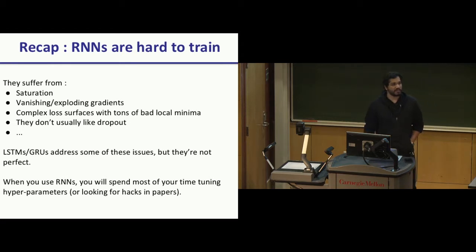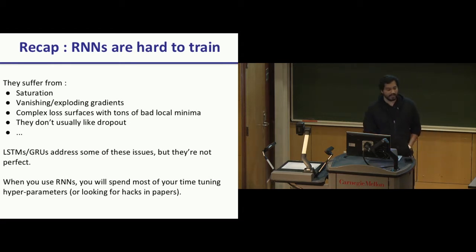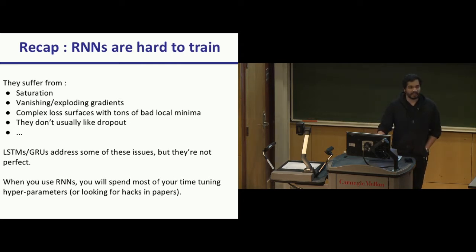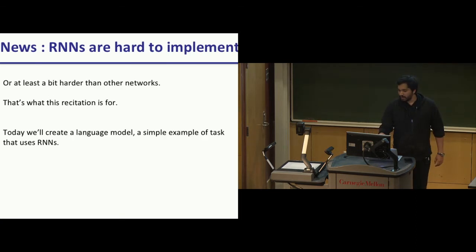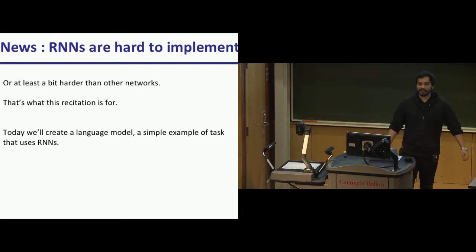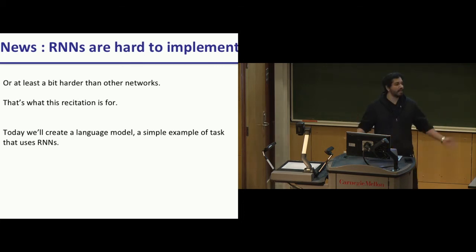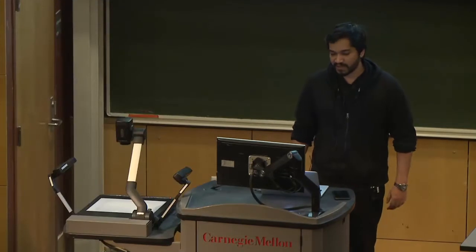You've seen architectures like LSTMs and GRUs that try to address some of these issues — it's still not perfect and it's still a bit difficult to train these things. In real life, when you decide to train an RNN, you're going to be spending most of your time doing hyperparameter tuning to get decent results, or looking for hacks in papers. They're also extremely hard to implement — coding them up is significantly harder than coding a CNN or a regular MLP. We're going to go through that together today.